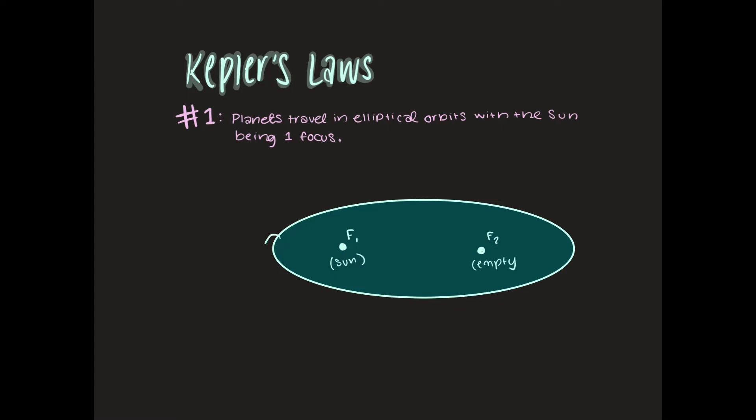We also have two points on the closest end to our sun and then the farthest end from our sun. The closest end to our sun is called the perihelion and then the farthest end from our sun is called the aphelion.